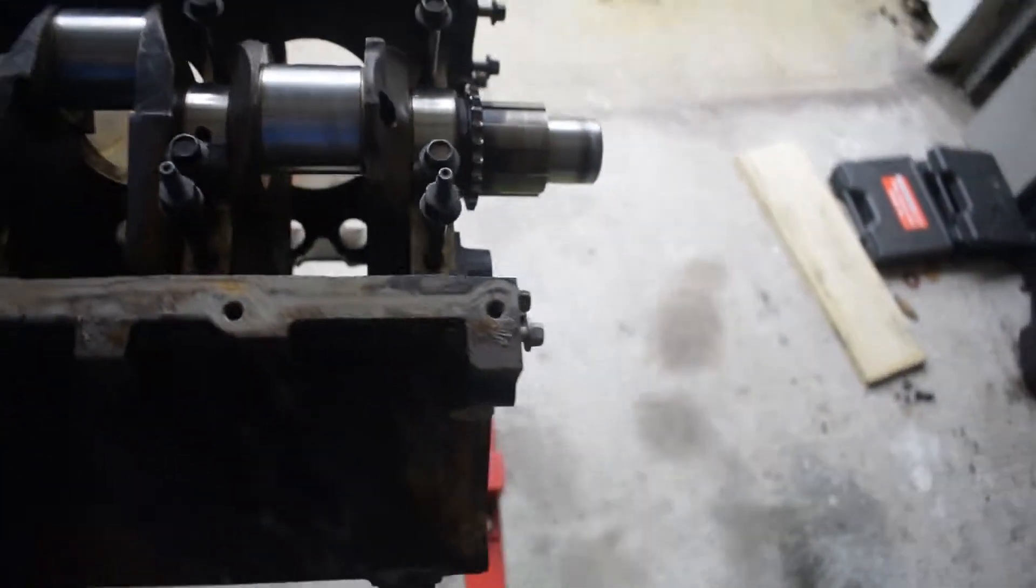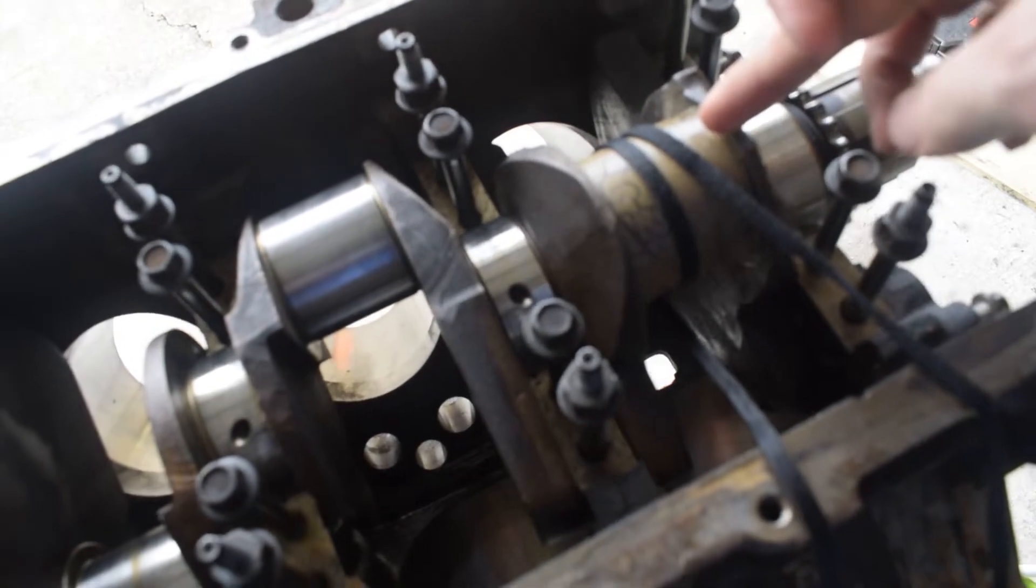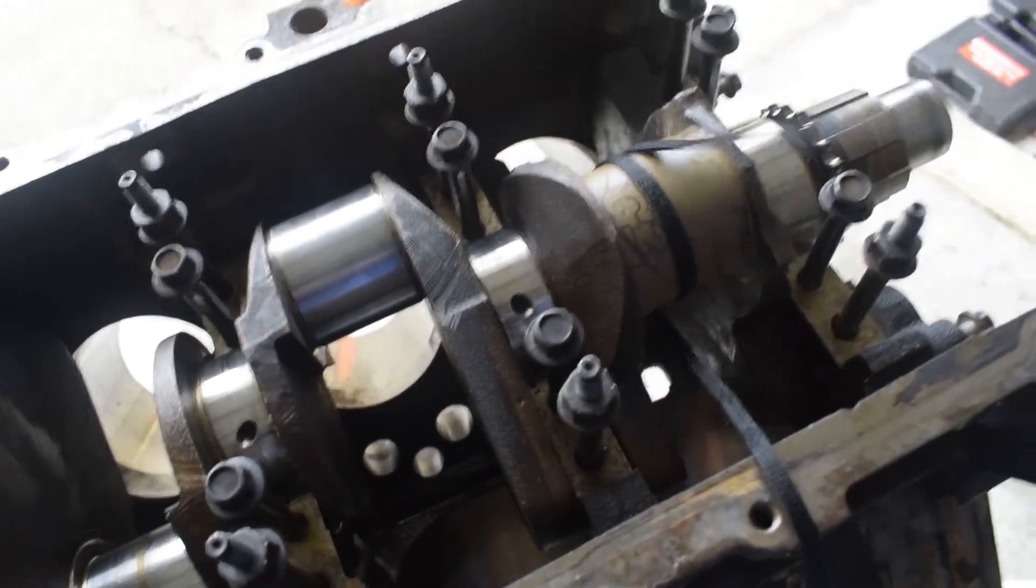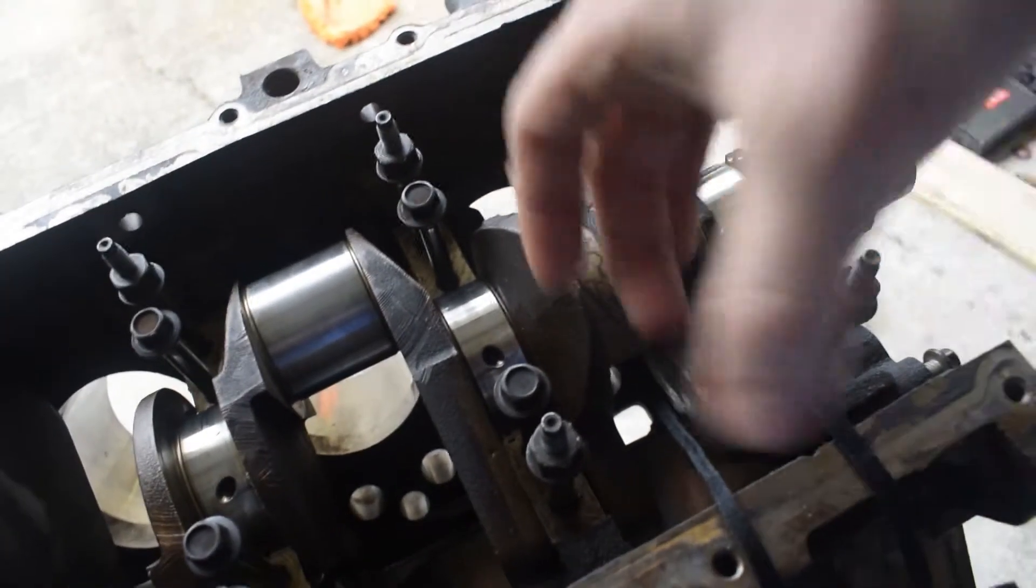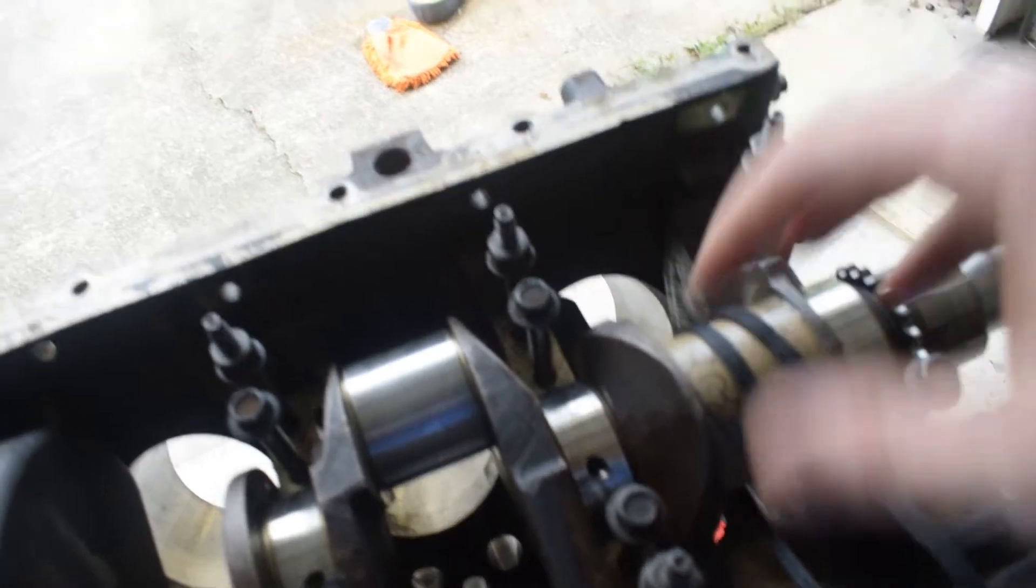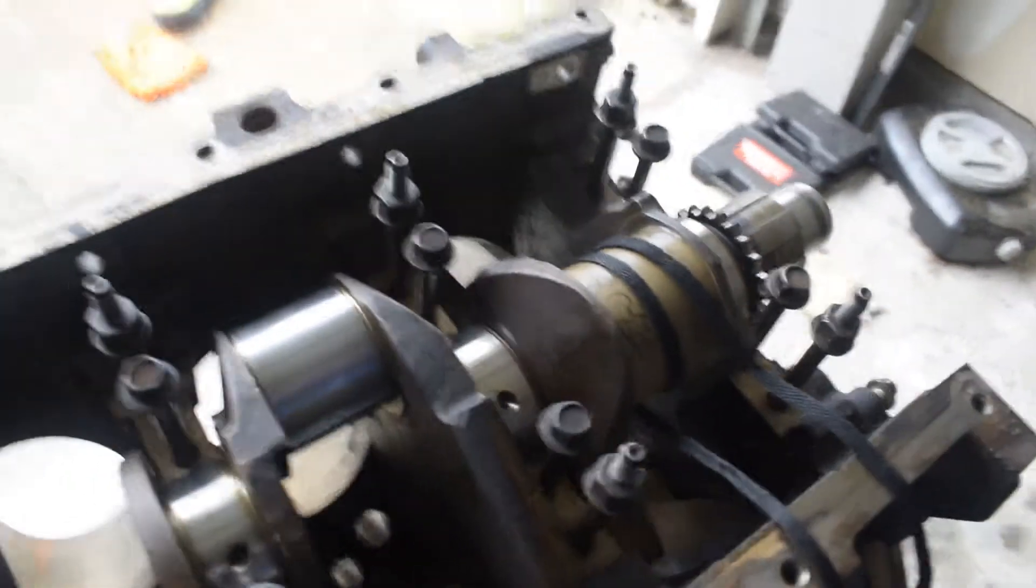Alright, so the shoelace method, they use it to kind of polish these bearings and the crank journals and whatnot. You get dry sandpaper and a shoestring, pull back and forth, and it spins it and starts to polish, whatever you want to say, cut, clean the crank itself. So we're doing that right now. Let's see how shiny it gets in a sec.